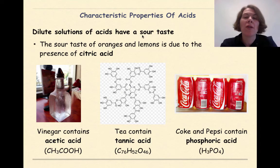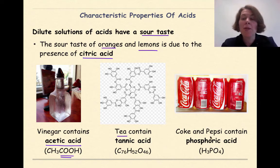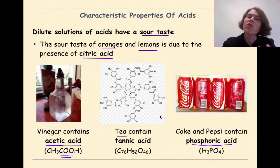Dilute solutions of acids will have a sour taste. If you've ever had a Sour Patch Kid or any sour type of candy, you know what I'm talking about. The sour taste of oranges and lemons is due to the presence of citric acid. Vinegar contains acetic acid, CH3COOH. We talked about this in organic acid, this COO group down here. Tannic acid is part of tea, and it's got a pretty intense molecular formula down here, C76H52O46. And Coke and Pepsi contain phosphoric acid, H3PO4. So all of these things have acids associated with them, not really strong acids, but they do have acids, which gives it that sour or sharp taste.